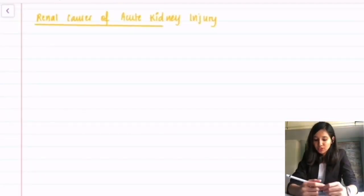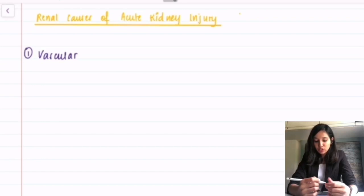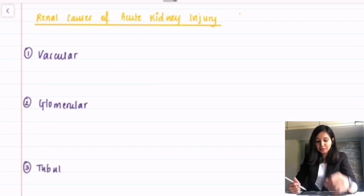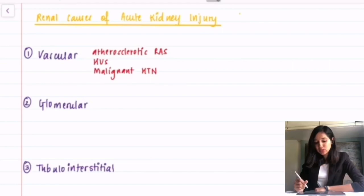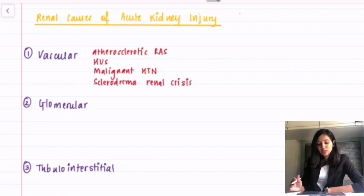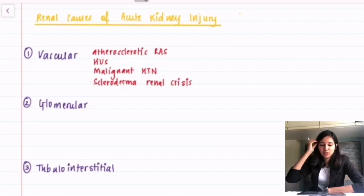Under renal causes of acute kidney injury, we have vascular, glomerular and tubulo-interstitial. Vascular causes could include large vessel diseases like atherosclerotic renal artery stenosis or small vessel diseases like HUS, malignant hypertension or sclerodermal renal crisis. Scleroderma is a chronic multi-system disorder with characteristic thickening of the skin and there appears to be no sign of such in our patient. So, that rules out sclerodermal renal crisis.